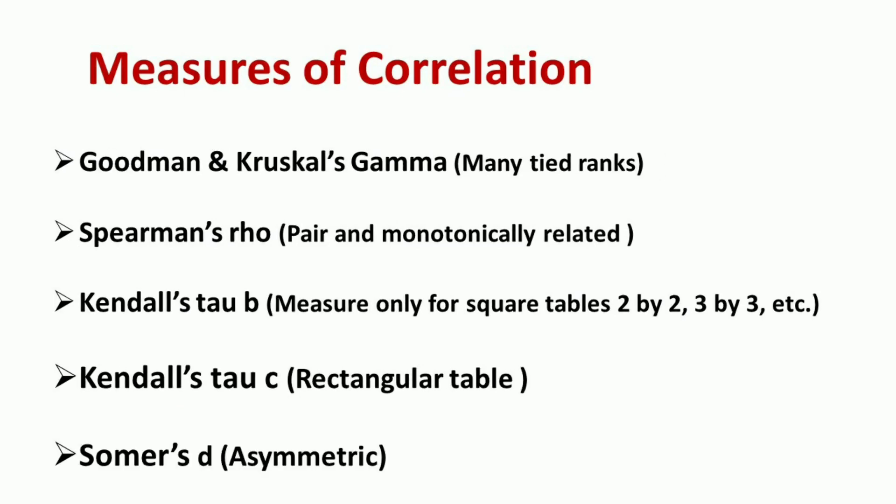The last type of correlation measure for two ordinal variables is Somers' D. The above correlation coefficients — gamma, Spearman's rank correlation, Tau B, and Tau C — do not make any distinction between which variable is independent and which is dependent. Somers' D is an asymmetric modification of Tau B. It measures how much prediction for a dependent variable improves based on knowing the value of the independent variable. Therefore, it is important to define which variable is independent and which is dependent when running the Somers' D test.